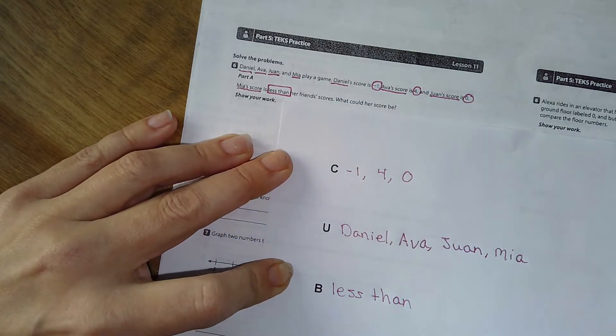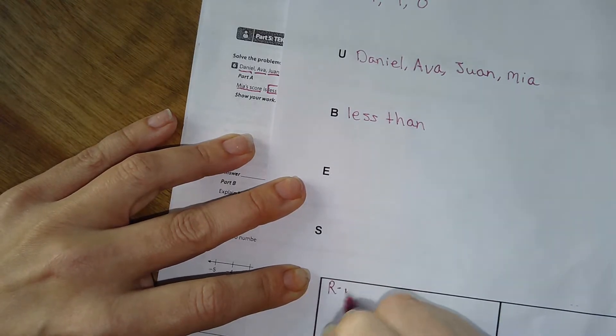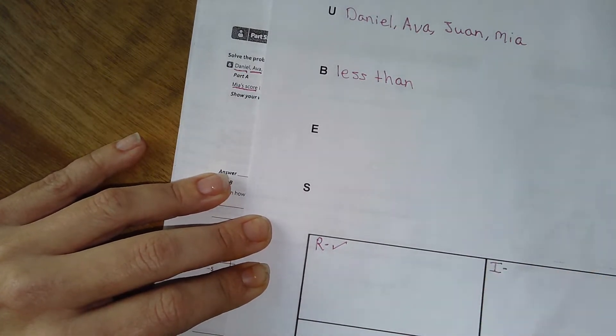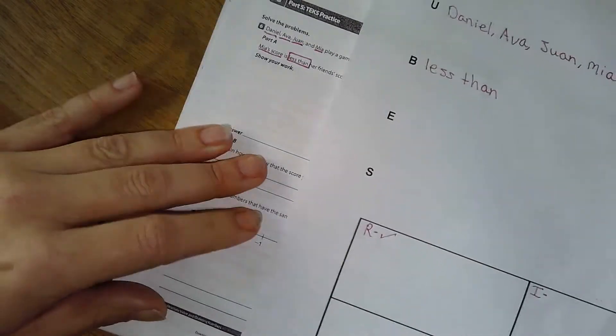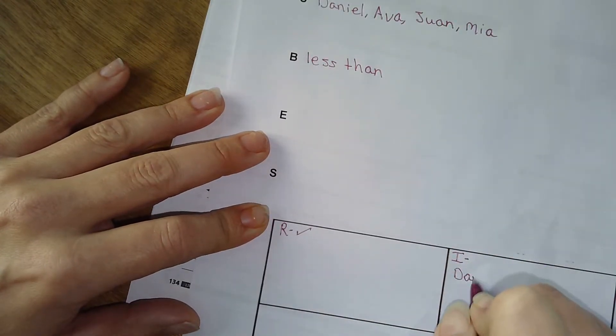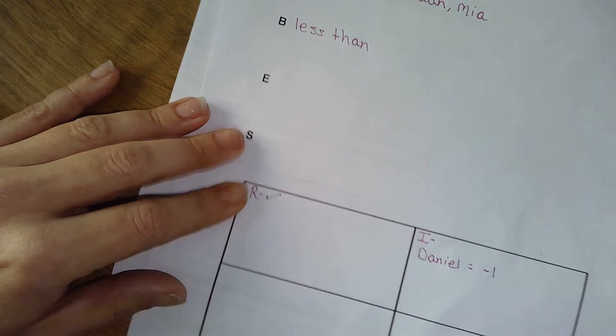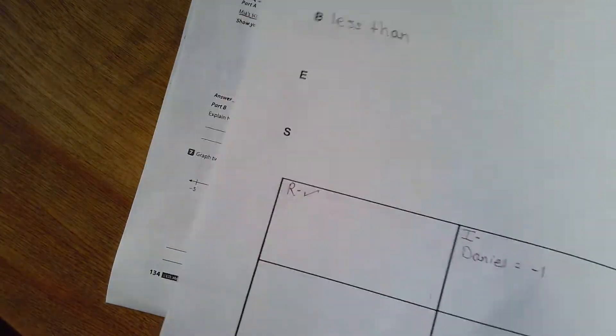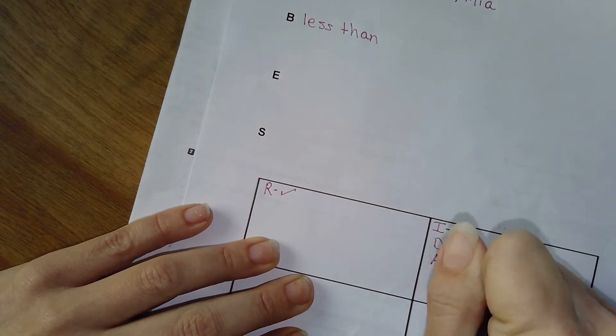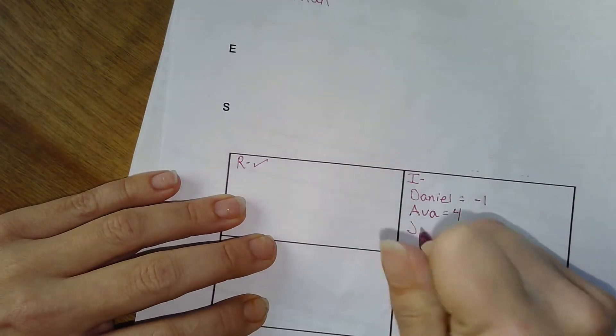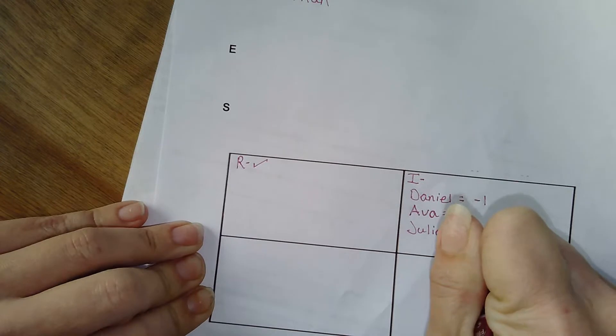Daniel, Ava, Juan, and I'm going to go ahead and put here. Well, I've read it, right? I've read it. My information, right? My information is that Daniel has a negative one. Oh, the grandbaby's singing. I'm sorry about that, guys. If y'all can hear it. Ava, one of the joys of working from home. Ava is four and Juan is zero, right?